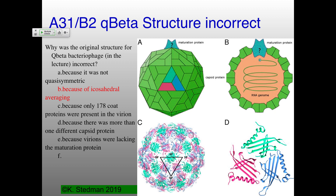Why is the Q beta structure we talked about — the first one in class — incorrect? That was because of icosahedral symmetry. The original structures for all of these were based on icosahedral symmetry, because that's the only thing the software could deal with. As soon as you impose icosahedral symmetry on something which is not symmetric, you lose any asymmetries. That's how icosahedral averaging lost the presence of the maturation protein in Q beta and MS2 as well.